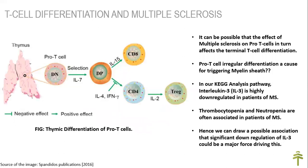Regarding T-cell differentiation and downregulation of interleukin-3, as seen from our KEGG analysis pathway, previous literature has noted that thrombocytopenia and neutropenia are associated with patients of MS. Hence, a possible association can be made: can the downregulation of interleukin-3 be a possible cause for thrombocytopenia and neutropenia in MS patients? This is also a research domain that needs to be highlighted in the future.